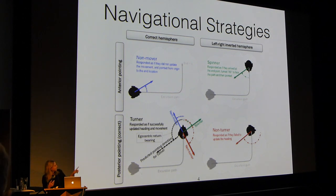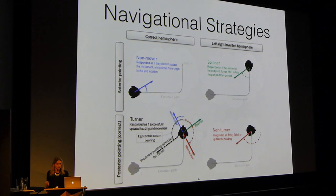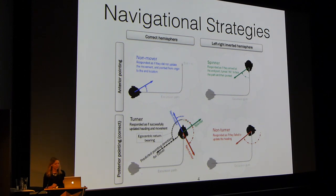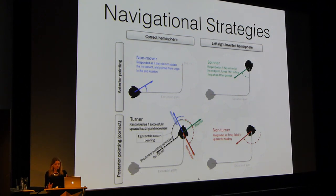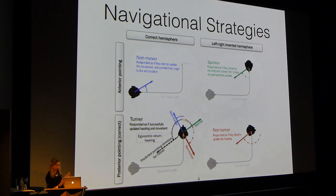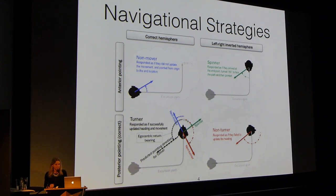On the top right, we have spinners. These people actually go through the path, but then it's as if they stopped, turned back to the origin, and then pointed to it. The bottom right are non-turners, and those people are similar to spinners in that they go through the path, but they don't update their heading — as if they moved forwards and shifted their body left, but not actually with the turn. And finally, turners on the bottom left are the ones that seem to update their heading correctly.